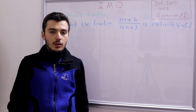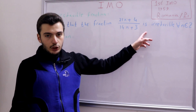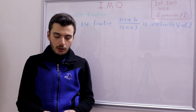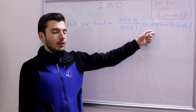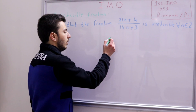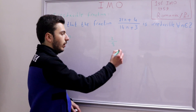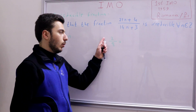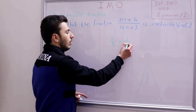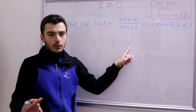We need to prove that this fraction is irreducible — but what does irreducible mean? It means that the fraction cannot be simplified further. For example, take the fraction 2 over 8: we can divide both numerator and denominator by 2 to get 1 over 4. So 2/8 is reducible, while 1/4 is irreducible.